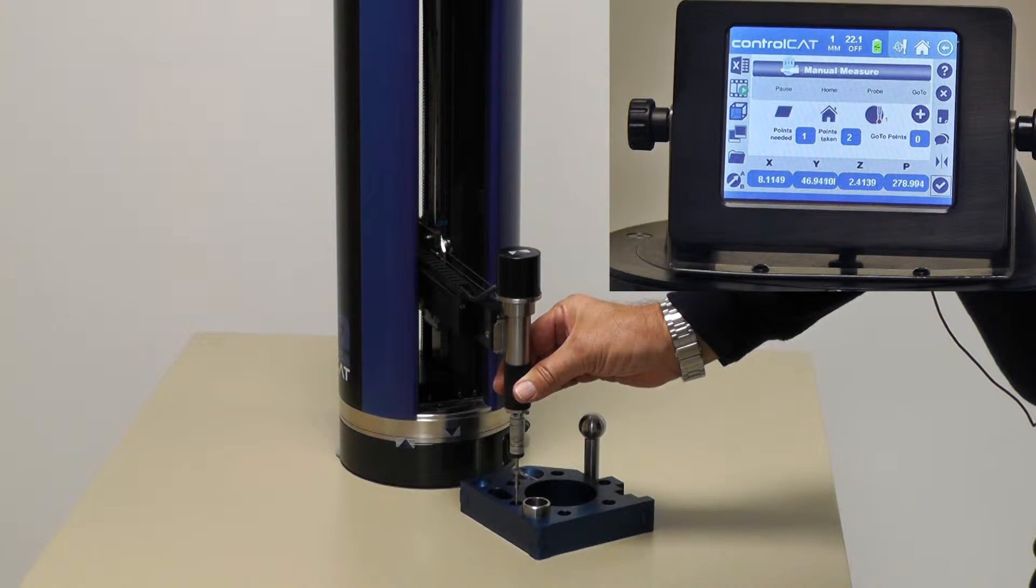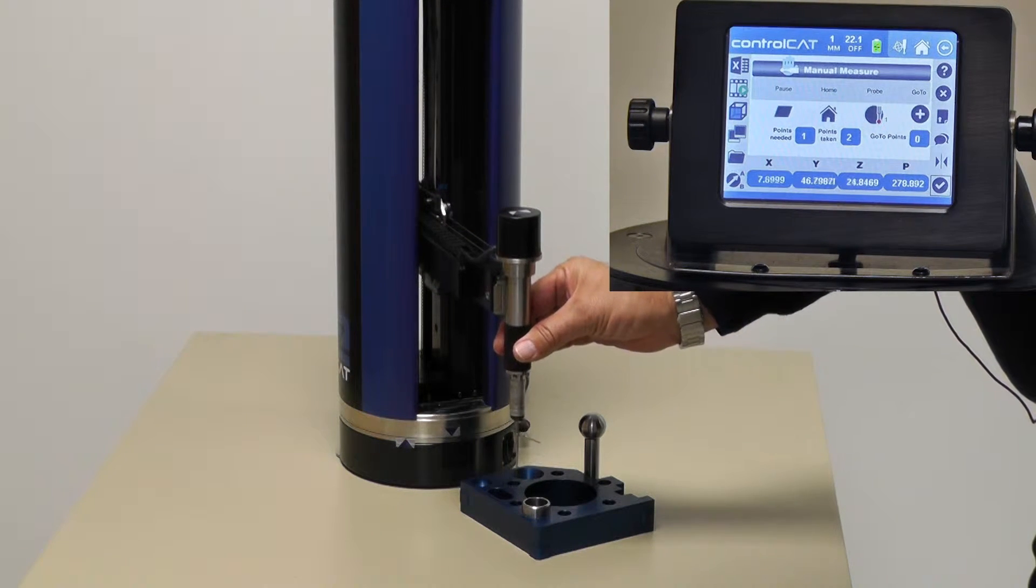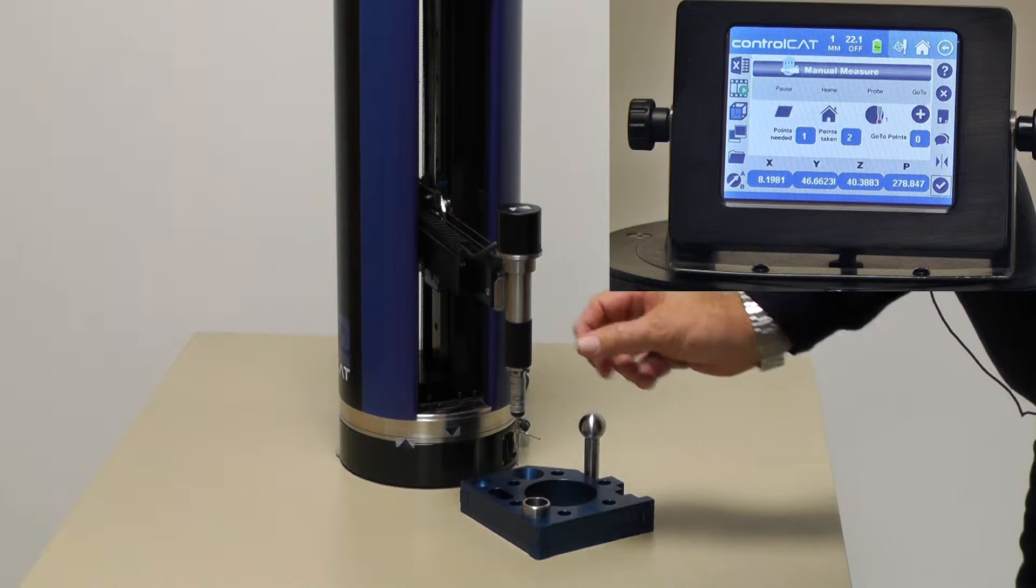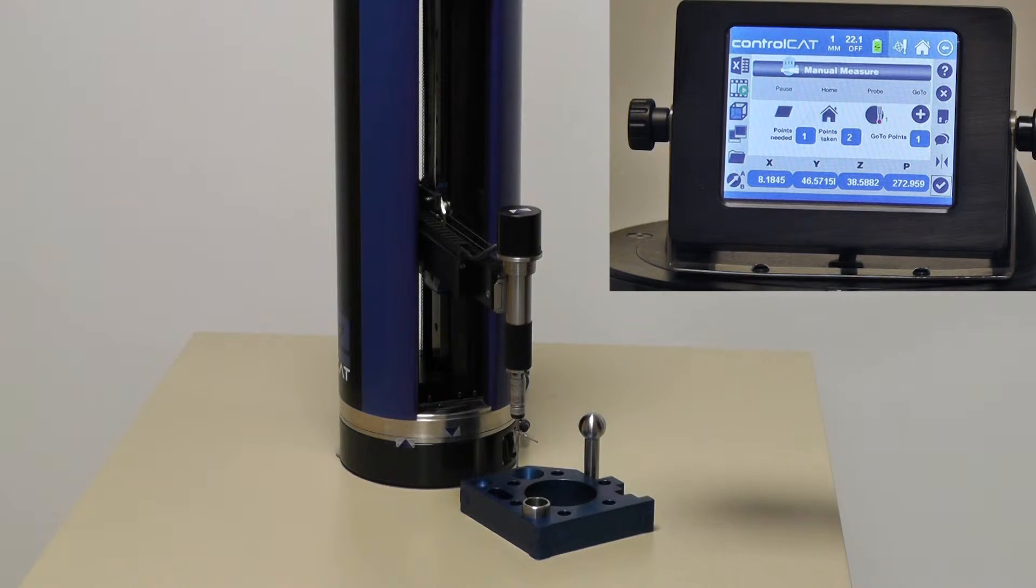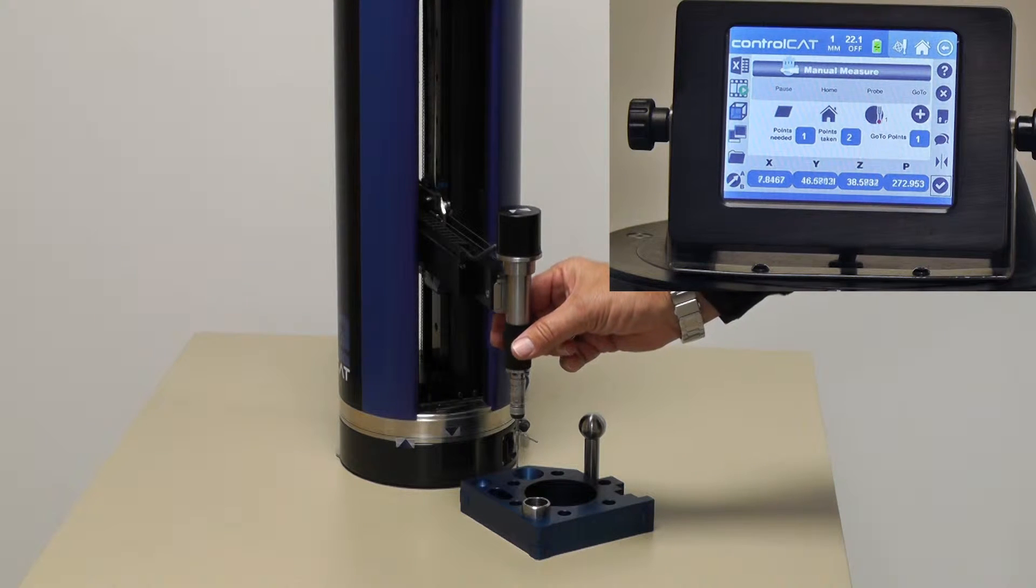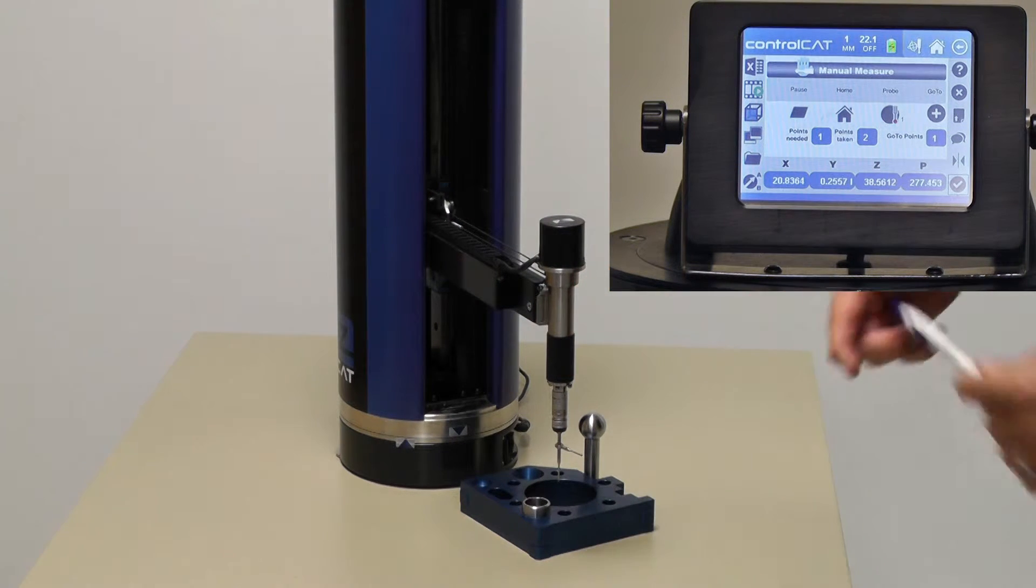Rather than hit this dimension or this raised part, I might raise the gauge up and I can give it a quick twist and that will drive the Zcat probe to that location. I can move it to another location.